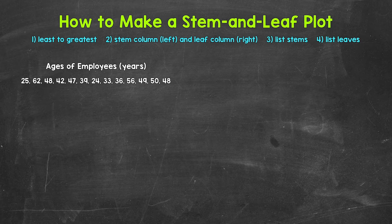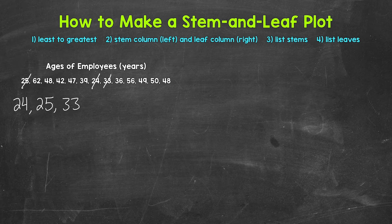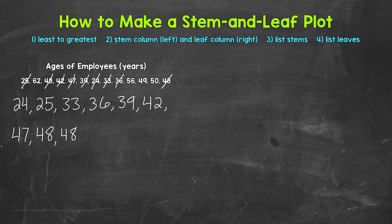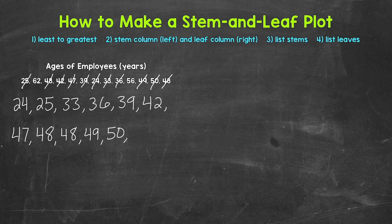This data is not in order, so we'll start there. Ordering the data will make everything much simpler once we get to creating the stem and leaf plot. Starting with the youngest age: 24, 25, 33, 36, 39, 42, 47, 48, 48, 49, 50, 56, and 62.